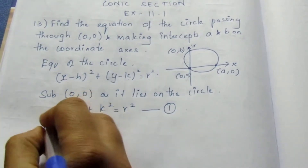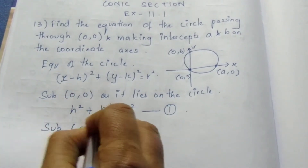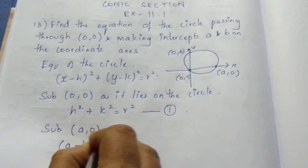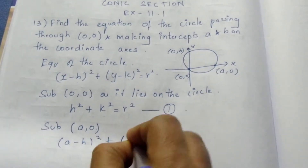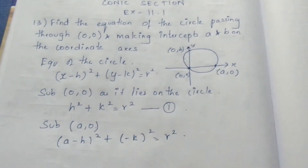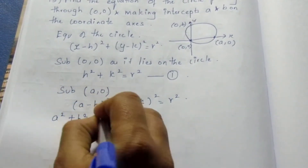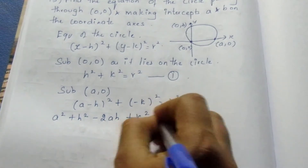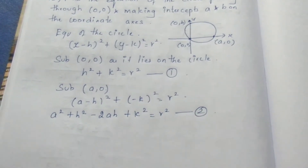Now substitute the point (A,0): it becomes (A - h)² + (0 - k)² = r², which expands to a² + h² - 2ah + k² = r². Let me write this as equation 2.